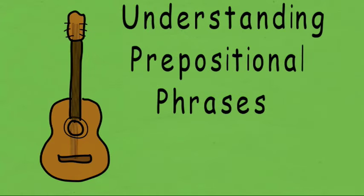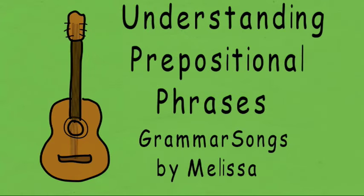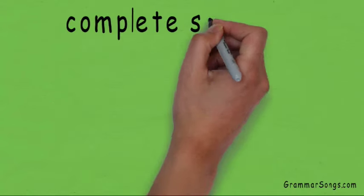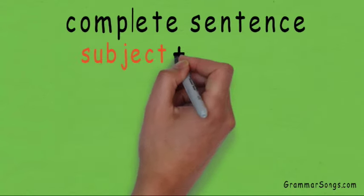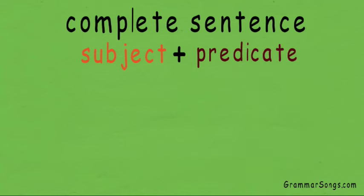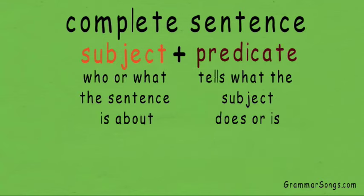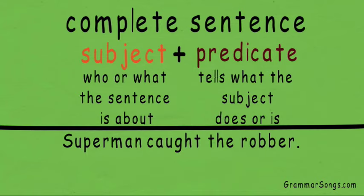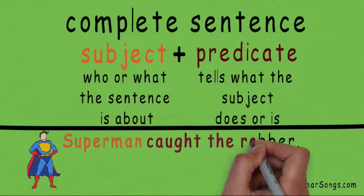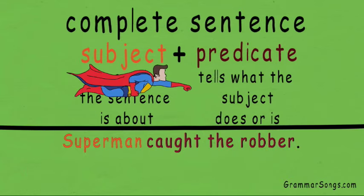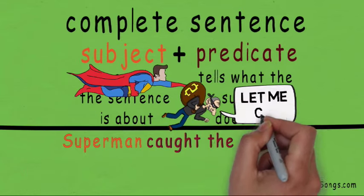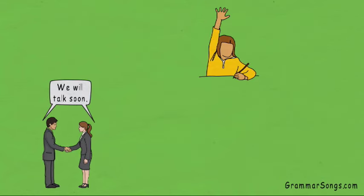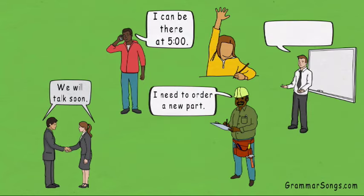Understanding Prepositional Phrases at Grammar Songs by Melissa. You have learned that a complete sentence is made up of a subject and a predicate. The subject tells who or what the sentence is about, and the predicate tells what the subject does or is. In the sentence 'Superman caught the robber,' Superman is the subject because he is who the sentence is about. Caught the robber is the predicate because it tells what Superman, the subject, did. Complete sentences help convey a clear message for our listeners or readers when we speak or when we write.